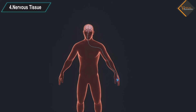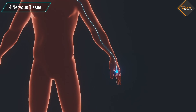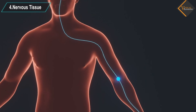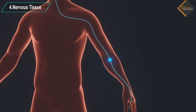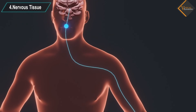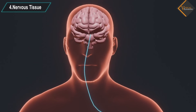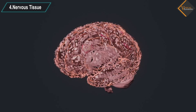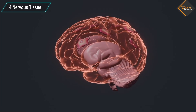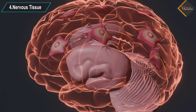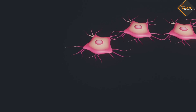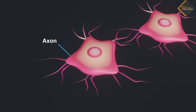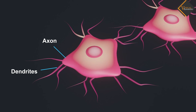Nervous tissue: all cells possess the ability to respond to stimuli. However, cells of the nervous tissue are highly specialized for being stimulated and then transmitting the stimulus very rapidly from one place to another within the body. The brain, spinal cord, and nerves are all composed of the nervous tissue. The cells of this tissue are called nerve cells or neurons. Usually each neuron has a single long part called the axon and many short, branched parts called dendrites. An individual nerve cell may be up to a meter long.